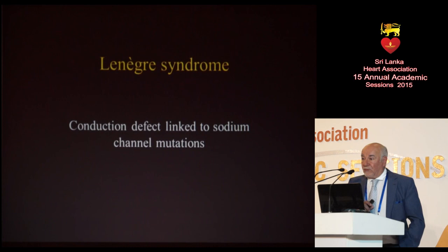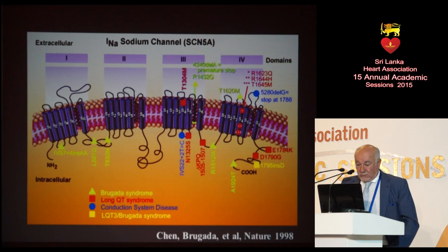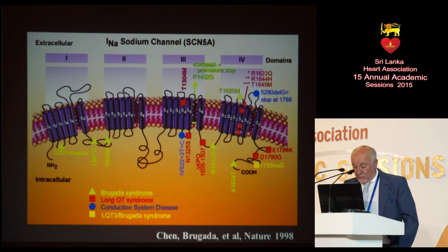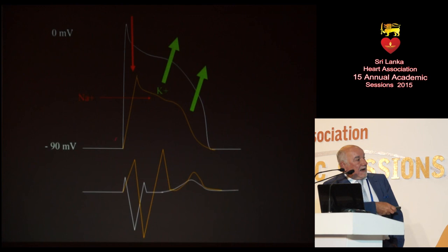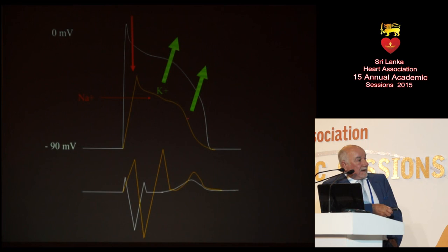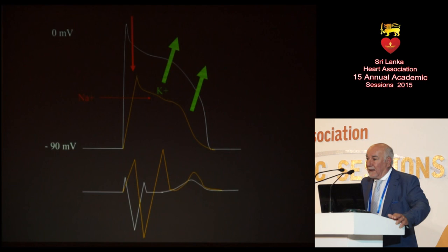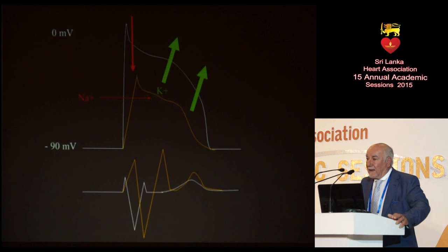Let's move for a moment to the third disease related to the sodium channel. Lenegre-Lev disease is a conduction defect linked to the sodium channel. A couple of mutations are known to cause familial conduction disease in individuals who go into AV block and require implantation of a pacemaker. The problem here is a major reduction of the sodium current, resulting in slow conduction, widening of the QRS complex, and repolarization abnormalities. This is akin to Brugada syndrome, and we see more and more overlap families where females with the same mutation present with conduction disease and males present with Brugada syndrome.